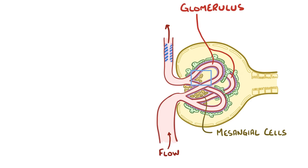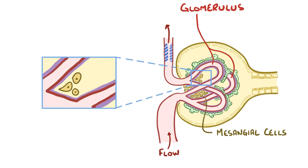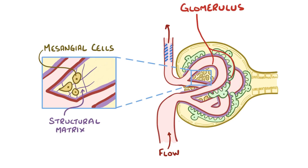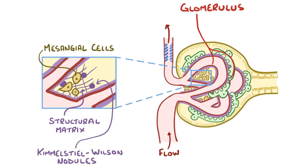In response to this high pressure state, the supportive mesangial cells secrete more and more structural matrix, which expands the size of the glomerulus. This matrix deposition and mesangial expansion can happen uniformly, or it can result in little nodules within the mesangium called Kimmelstiel-Wilson nodules, which are tiny balls of protein.